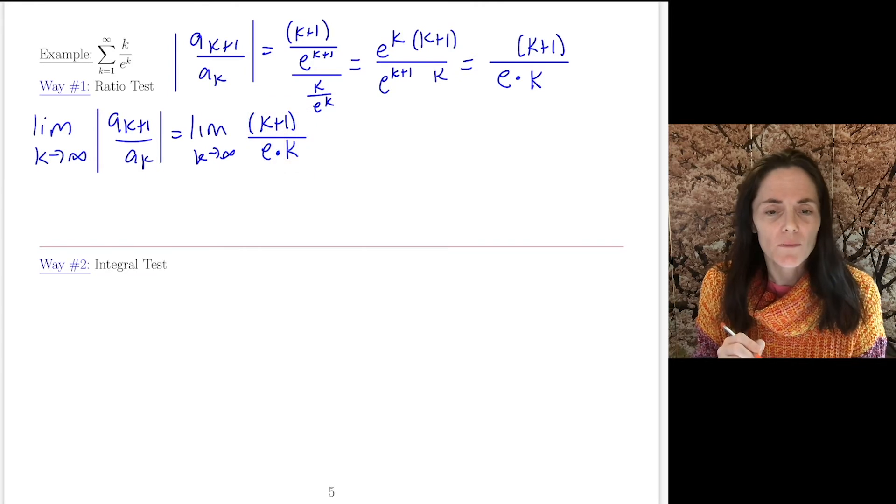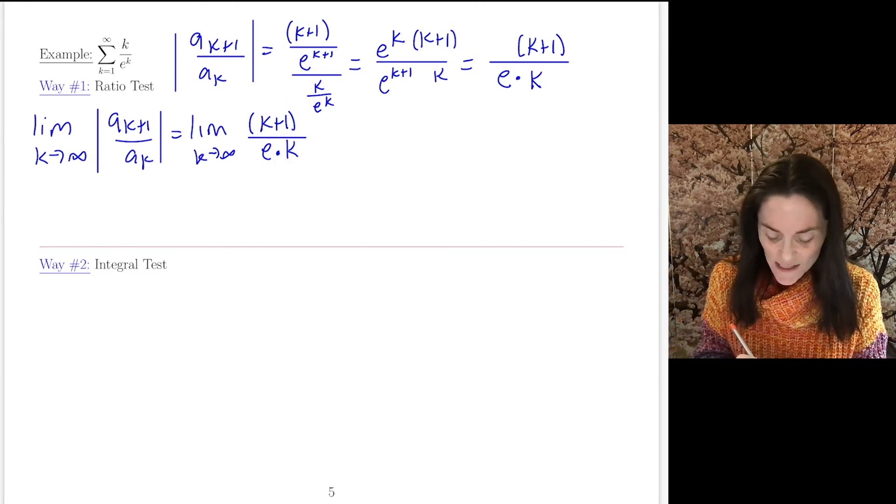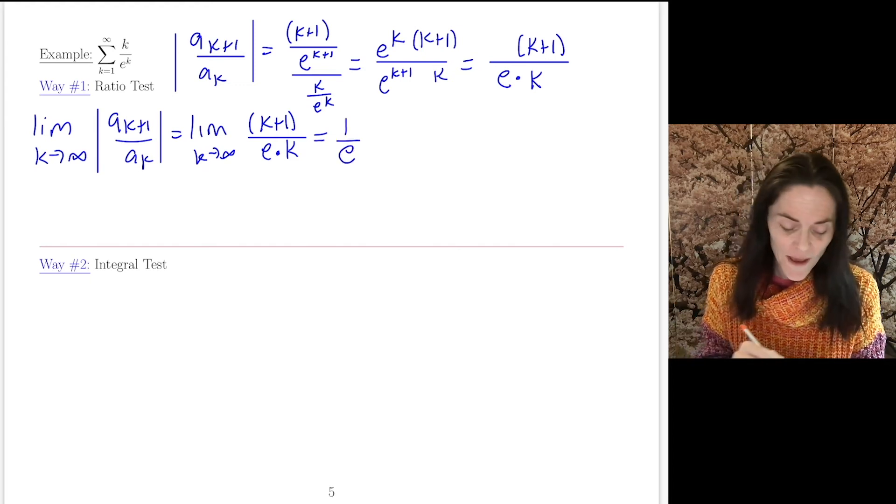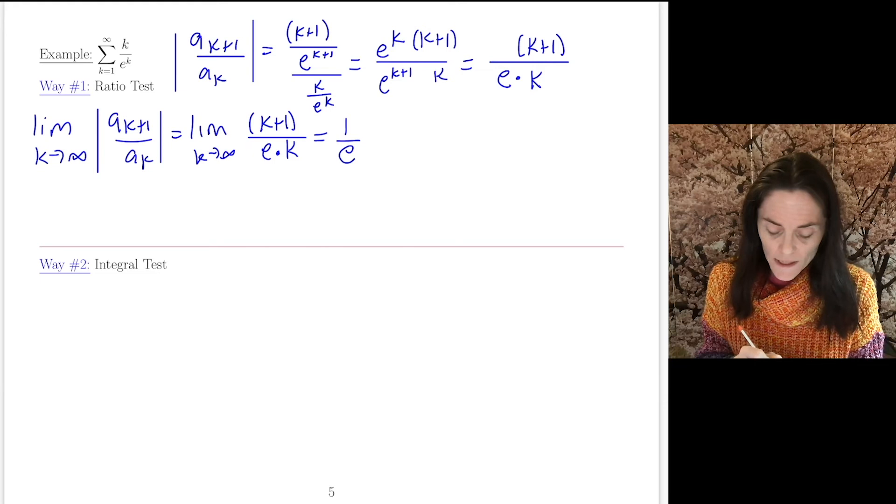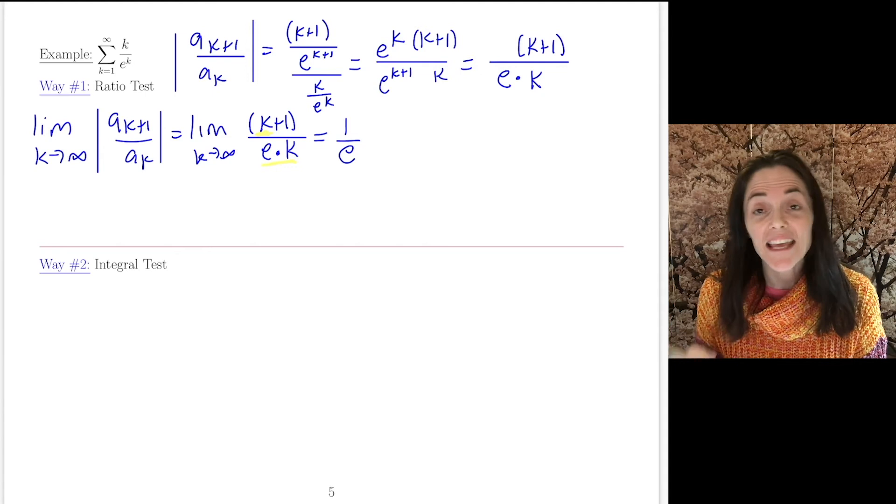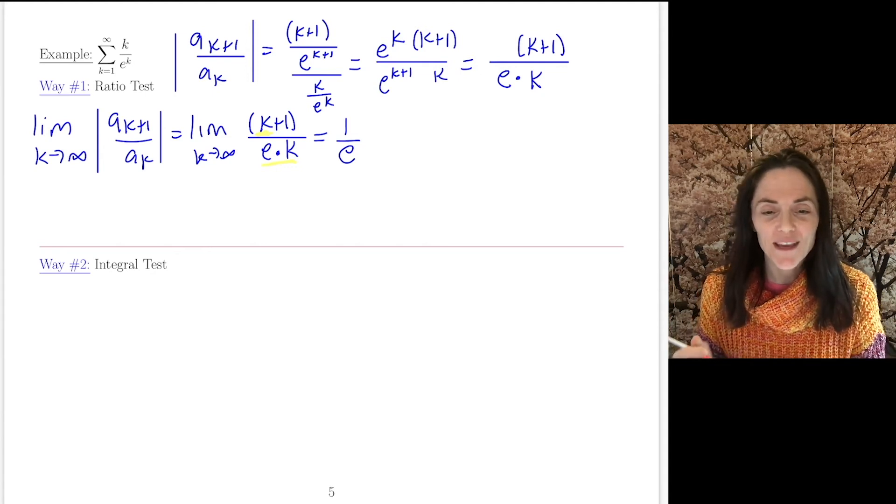And so, well, just we have an e in the denominator. This limit is 1/e. Or another way you can think about that is think about what dominates. This is what dominates the numerator. This is what dominates the denominator. And they have the same power of k. And so this limit will be 1/e.